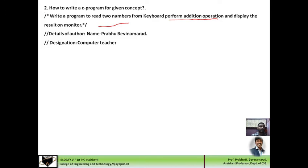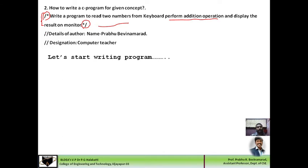For two lines together, we have written a multi-line comment — the first line begins with the opening multi-line comment symbol and the last line ends with the closing symbol. For the remaining lines, we have written single-line comments. Now let us start writing the program to implement the addition operation.